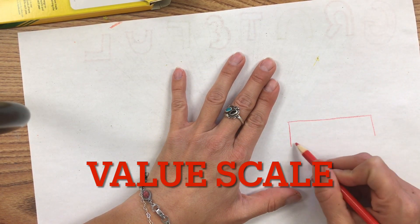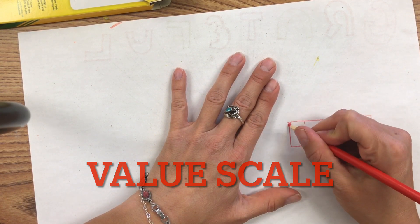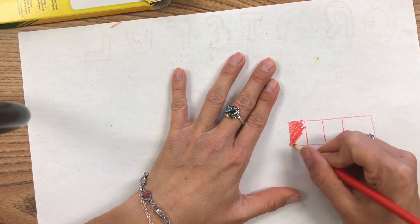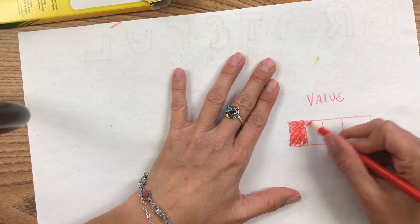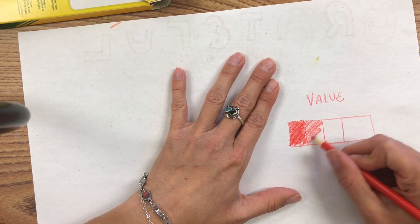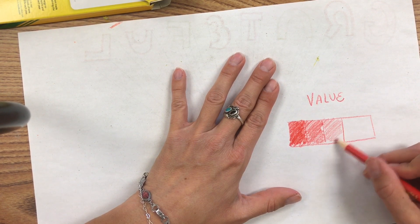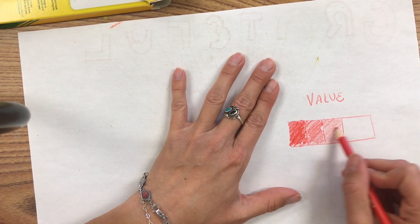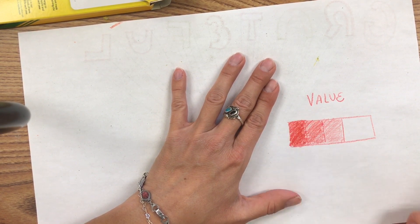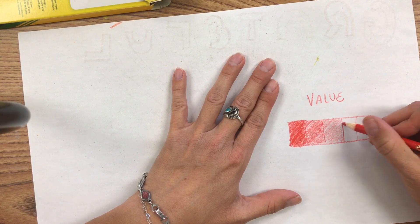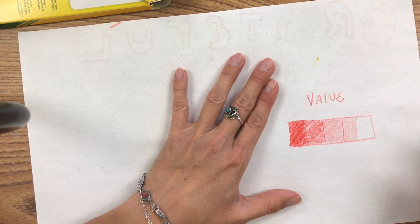It helps to add a value scale. You can just flip your paper over and create a value scale so that you can know what a dark value looks like in comparison to a medium value and a light value. You can also figure out what pressure you need to use when you're coloring. It's just a rectangle with four boxes. You can practice dark, medium, and light values.